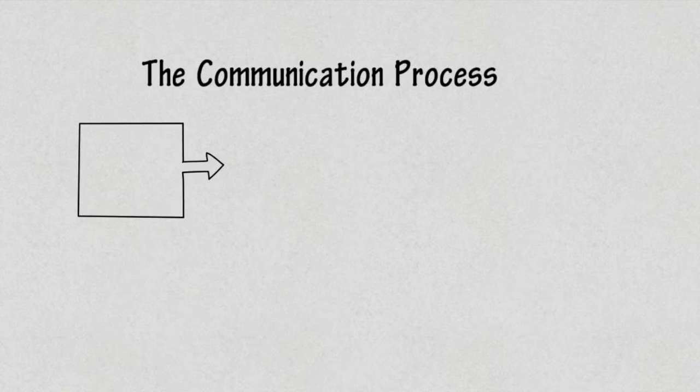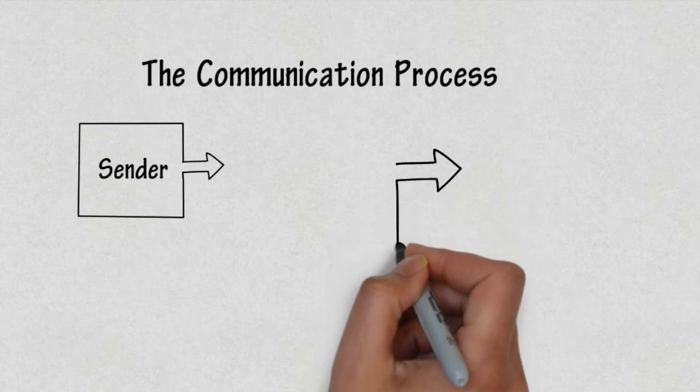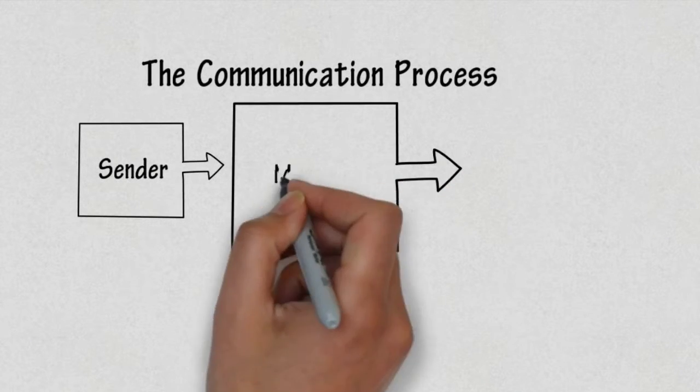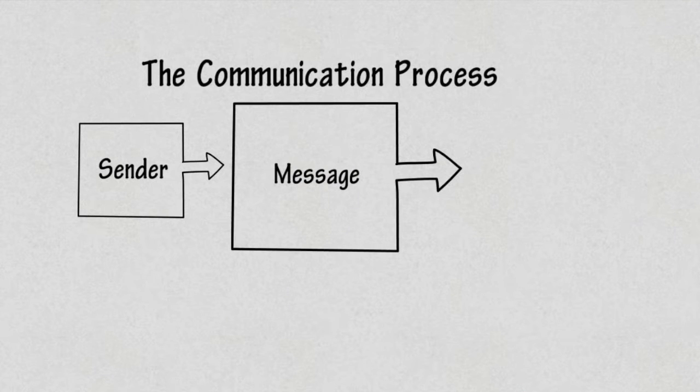Let's start by looking at the communication process. In every communication process, there is your sender, the message, in this case discussing veganism, and then there is the receiver, the person you are delivering your message to.